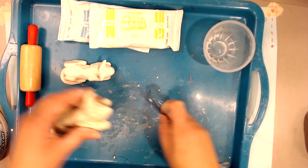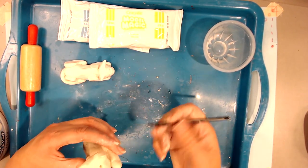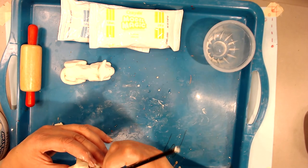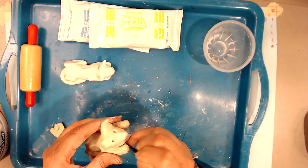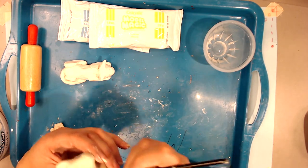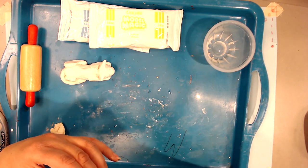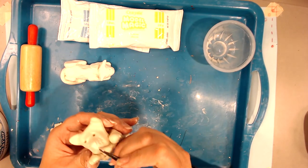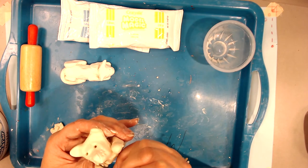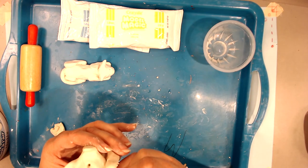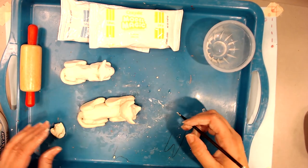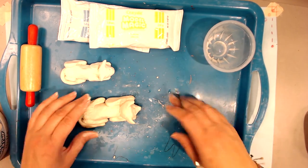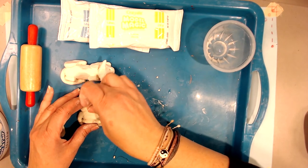If you were doing a cat, you might carve some little whiskers. I'm going to put some little freckles here. I think it makes his nose look cute. Carve a little mouth like that. And then my dog is finished.